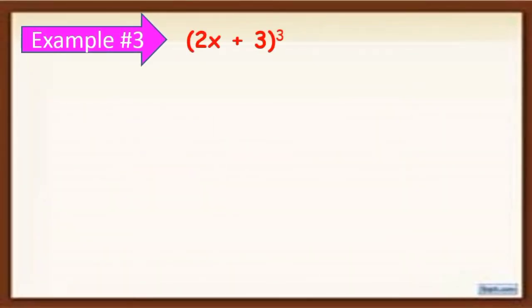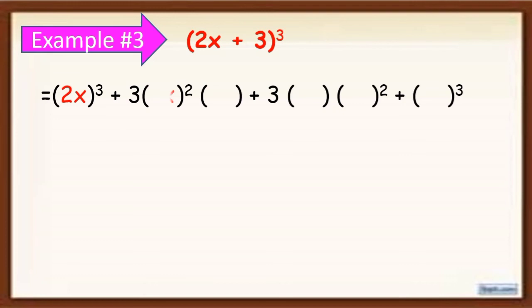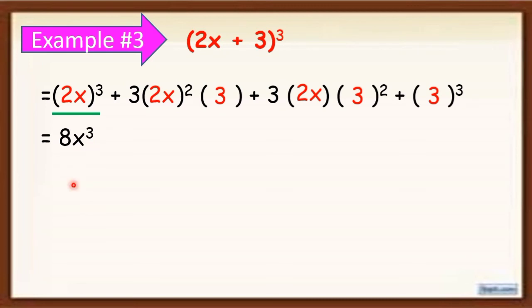Another example: (2x + 3) quantity cubed. Again, this will be our pattern — write the first term and last term in their respective positions. Simplify: 2x quantity cubed becomes 8x cubed, because 2 times 2 times 2 equals 8 and x cubed is x cubed. Plus: simplify 2x squared first — 2 times 2 equals 4, then 3 times 4 equals 12, times 3 equals 36, and x squared is x squared.